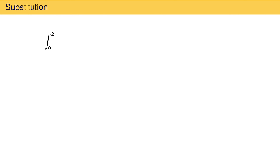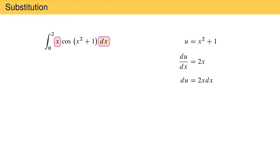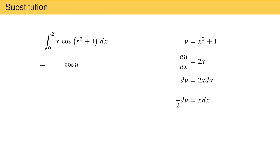This approach applies for any method of integration. An example using substitution is the integral from 0 to 2 of x cosine of x squared plus 1 dx. To evaluate this, we first find the indefinite integral using substitution. We set u equal to x squared plus 1, the argument of the cosine function. The derivative of u with respect to x is 2x, so du equals 2x dx, and solving for x dx gives 1 half du. In the integrand, we replace x squared plus 1 with u to give cosine of u, and replace x dx with 1 half du.